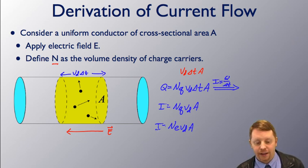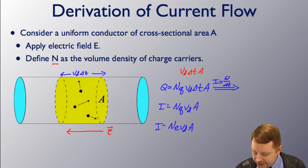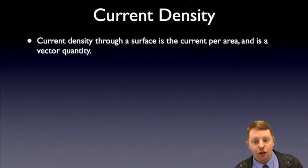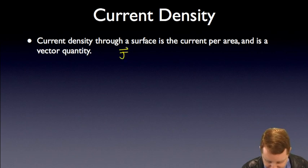Alright, so we've found a derivation for current flow. Let's see if we can take this one step further and talk about current density. Current density through a surface is just the current per area, and that's a vector quantity j.